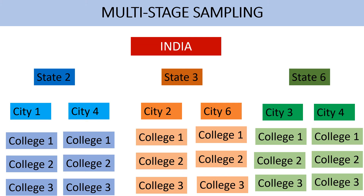Again, among those cities I will select few cities as sample by using simple random sampling. Let's say I have selected City 1 and City 4 from State 2, City 2 and City 6 from State 3, and City 3 and City 4 from State 6. If it is feasible for me to collect data from all the teacher educators from these cities, then I can stop my multi-stage sampling here — this will be my final sample. But if it is not feasible, then I will further divide these cities into sub-clusters.